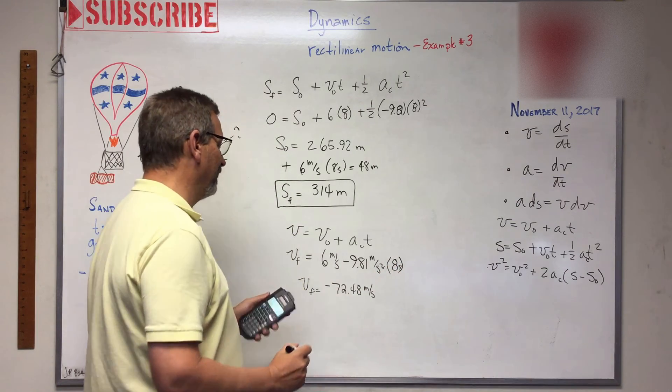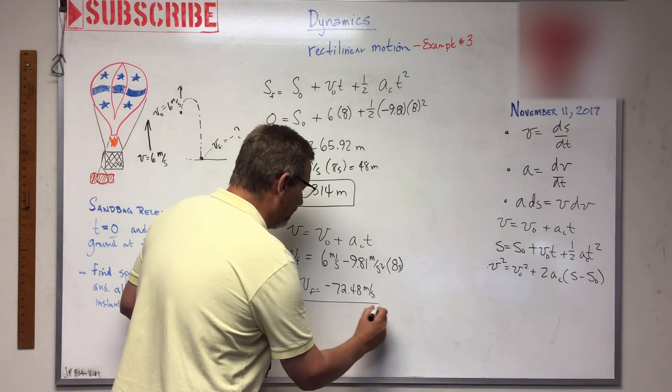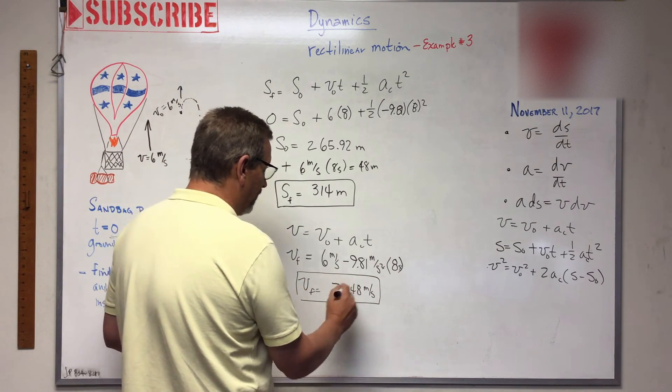So I have meters per second minus meters per second. And there you go, there is the speed, or you could call it 72.48 meters per second downwards. How's that? Is that better? Either one.